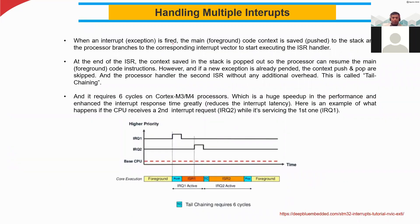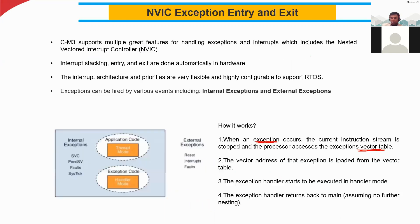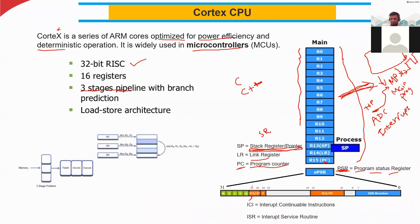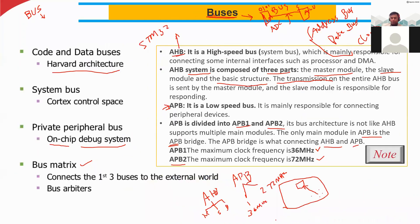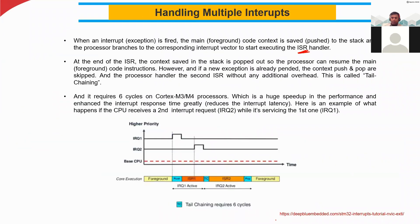When an interrupt is fired, the main code context is saved to the stack — that is why we use the stack register. The processor then branches to the corresponding interrupt vector to start executing the ISR handler. Whenever an exception or interrupt happens, we stop the main program, store the current status of the main program, execute the interrupt, complete the interrupt request, and then come back to the main program.